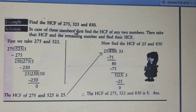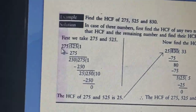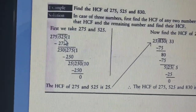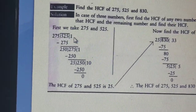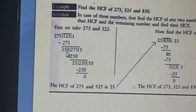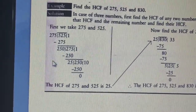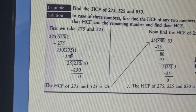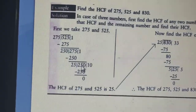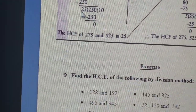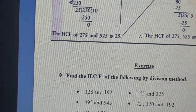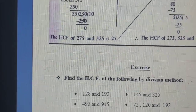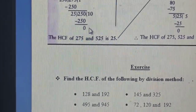We follow the same process as before. The smaller number 275 is the divisor and 525 is the dividend. 1 × 275 = 275, so the remainder is 250. Now 250 becomes the divisor and 275 becomes the dividend. 1 × 250 = 250, so the remainder is 25. Again, 25 becomes the divisor and 250 becomes the dividend. 25 × 10 = 250, so we get remainder 0.